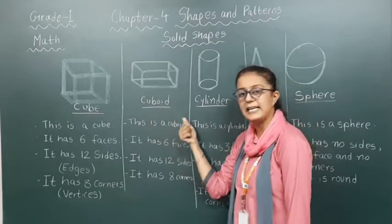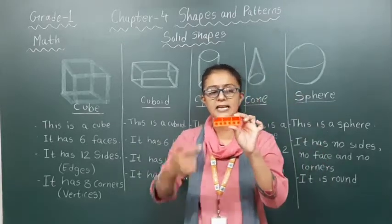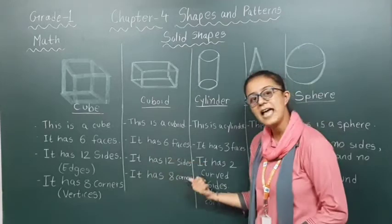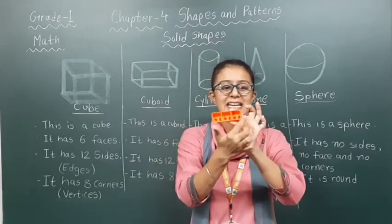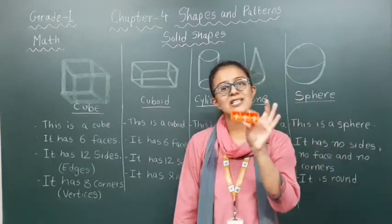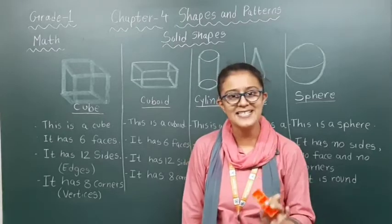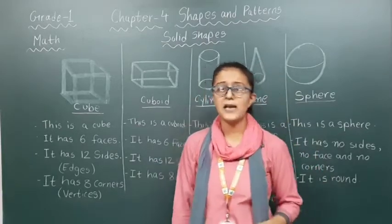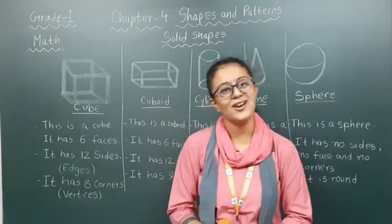This is a cuboid — C-U-B-O-I-D. It has 6 faces, 12 sides or edges, and 8 corners. Where the edges are meeting is known as corners. A very good example of cuboid is the rectangular block as well as the rectangular fish tank. There are many more examples related to cuboid which we will discuss in our online session.